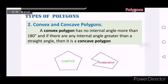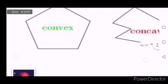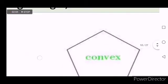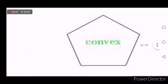We can also classify polygons as convex and concave polygons. A convex polygon has no internal angle more than 180 degrees. Notice that the interior angles in this figure are all less than 180 degrees. Therefore, this is a convex polygon.